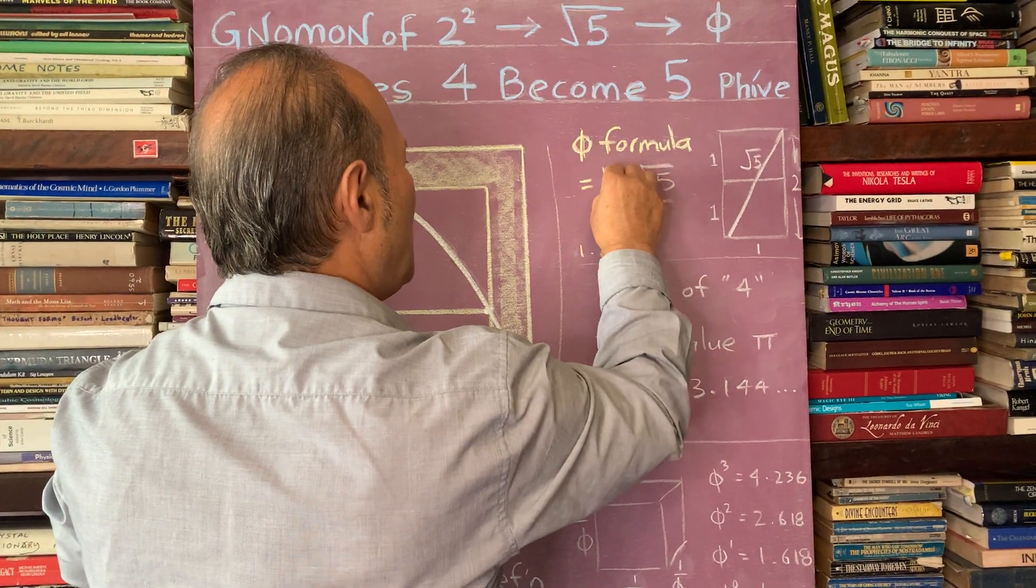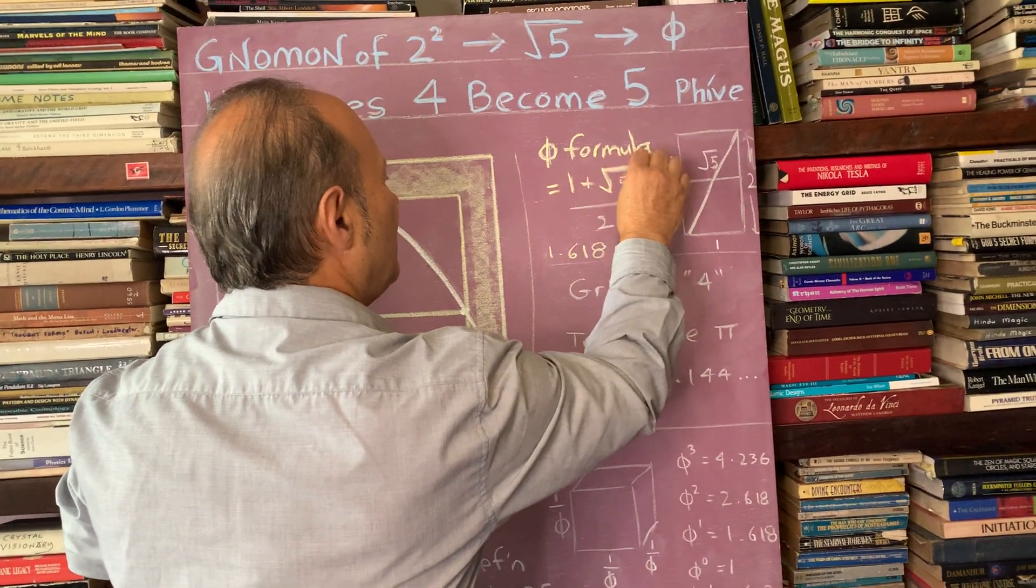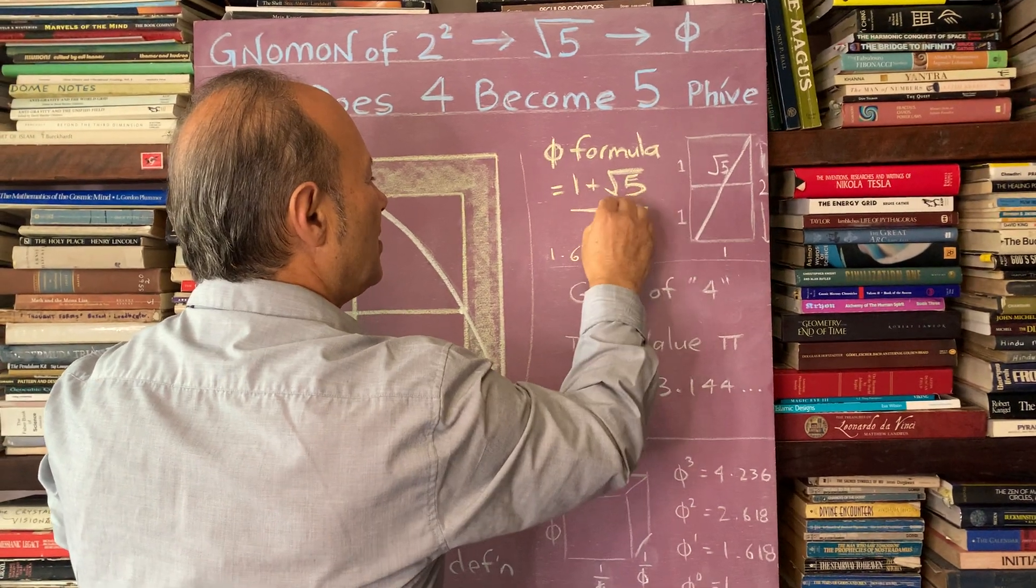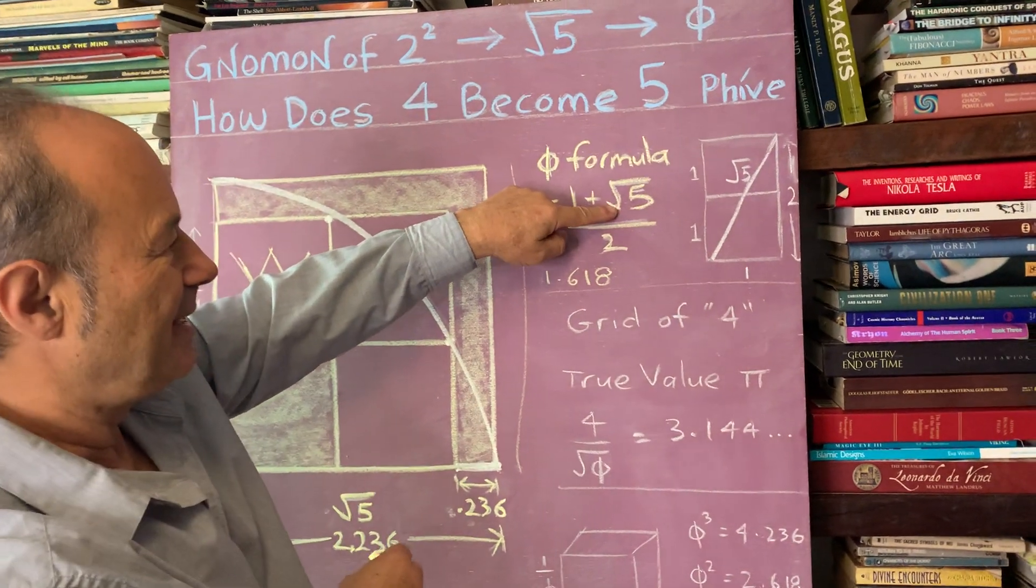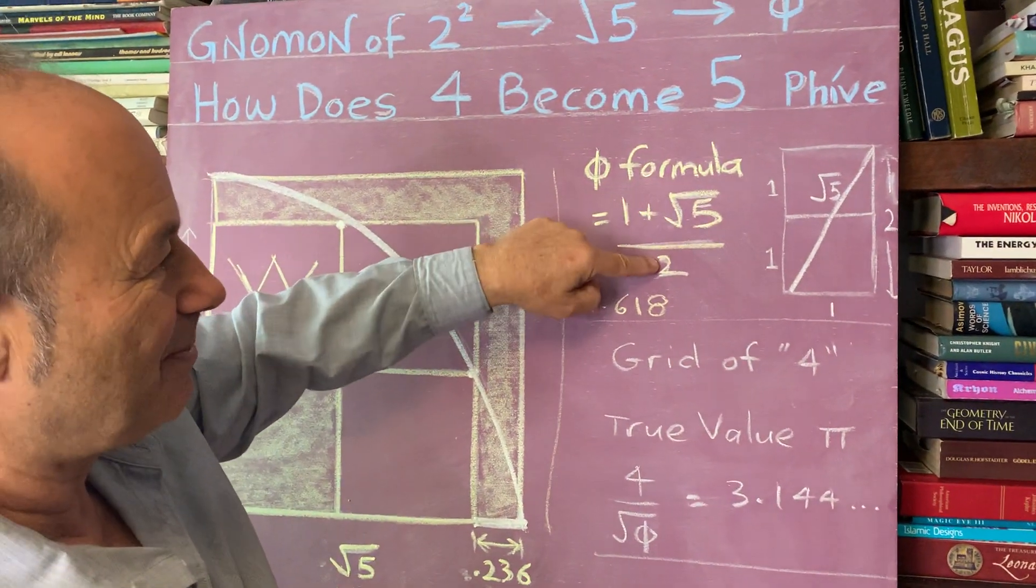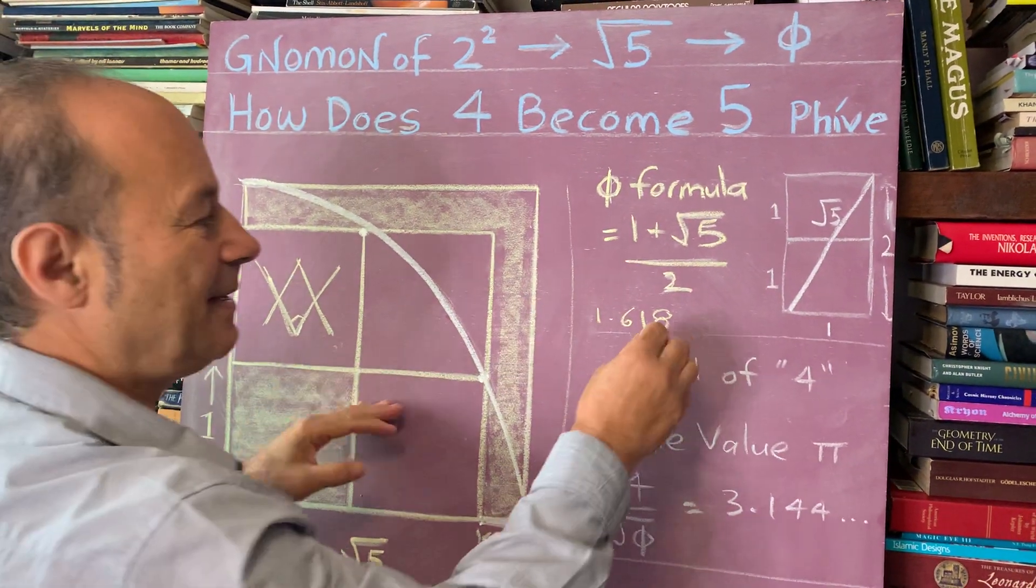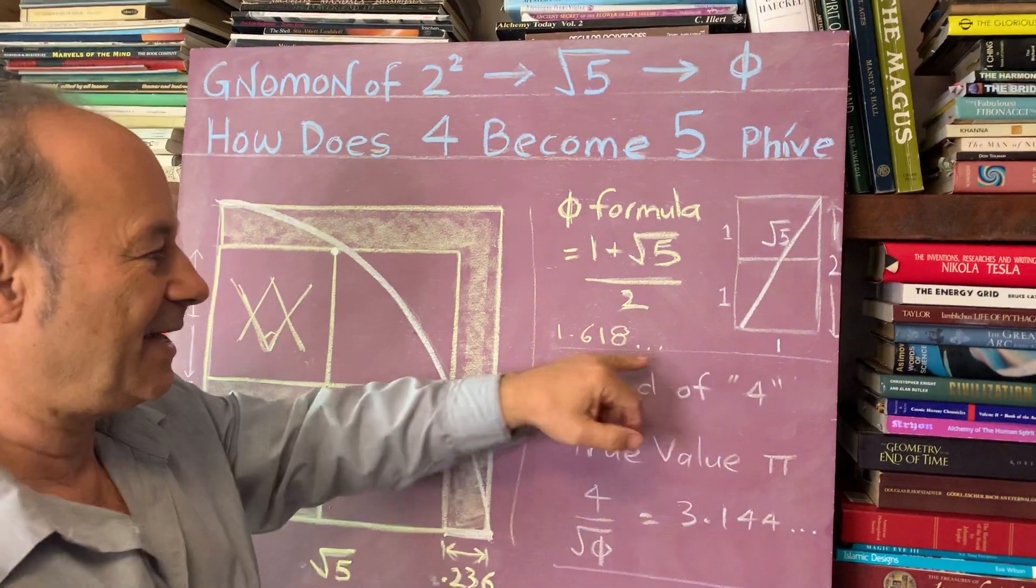The formula is 1 plus root 5 divided by 2. So 1 plus 2.236 is 3.236 divided by 2 gives 1.618. We put dot, dot, dot. That means it goes infinite.